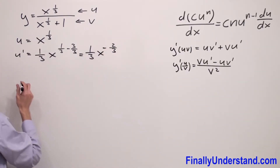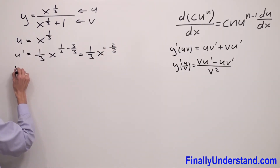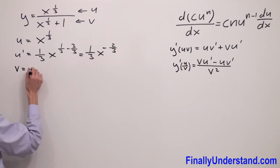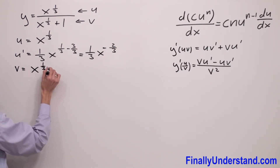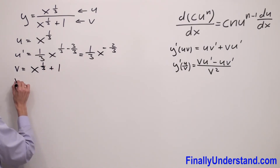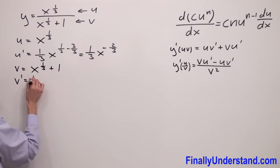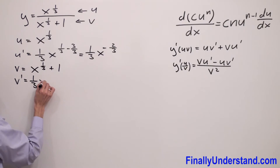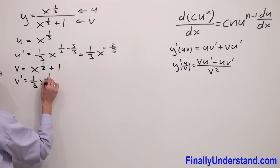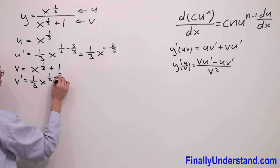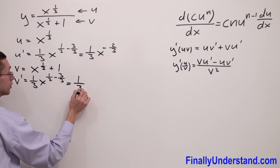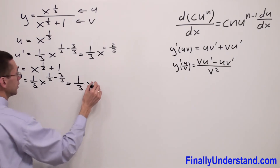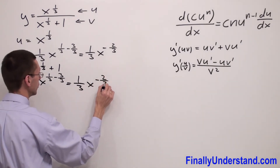Now, v is equal to x to the 1 third plus 1. So, v prime is equal to 1 third x to the power 1 third minus 3 over 3, which is equal to 1 third x to the negative 2 thirds.